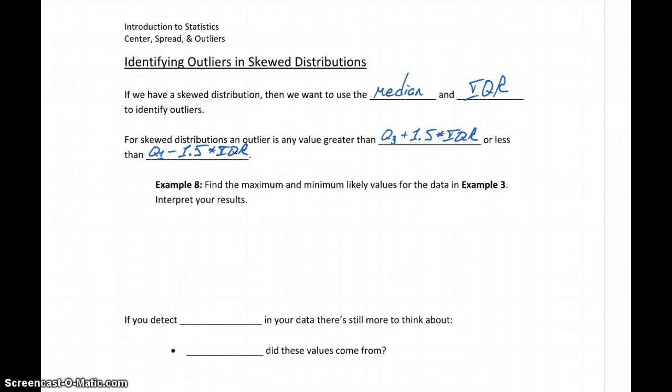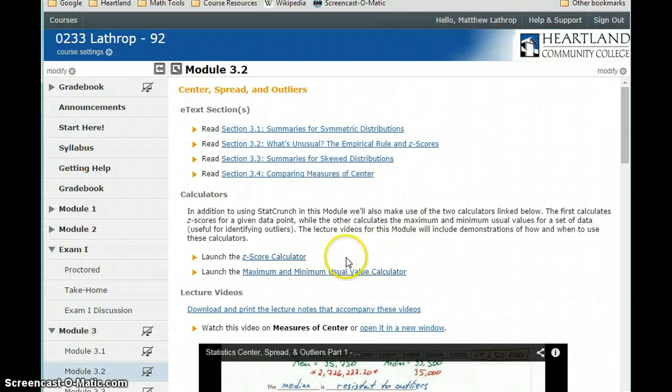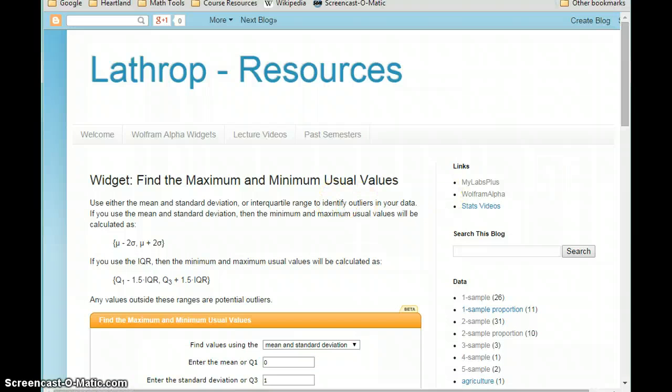So again, not terribly complicated formulas, but we're going to introduce a calculator that we can use, so we just plug in two numbers and generate that result. In example 8, we want to go back to the data we considered in example 3, so possession limits. We want to find the maximum minimum likely values, and again anything beyond that will be considered unlikely to occur, or an outlier. So we'll launch the maximum minimum usual value calculator, which is on that module 3.2 page again.